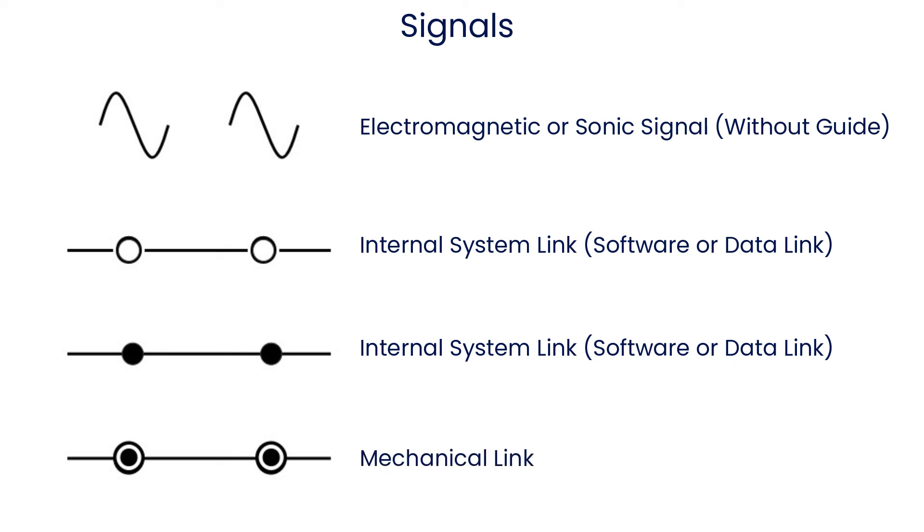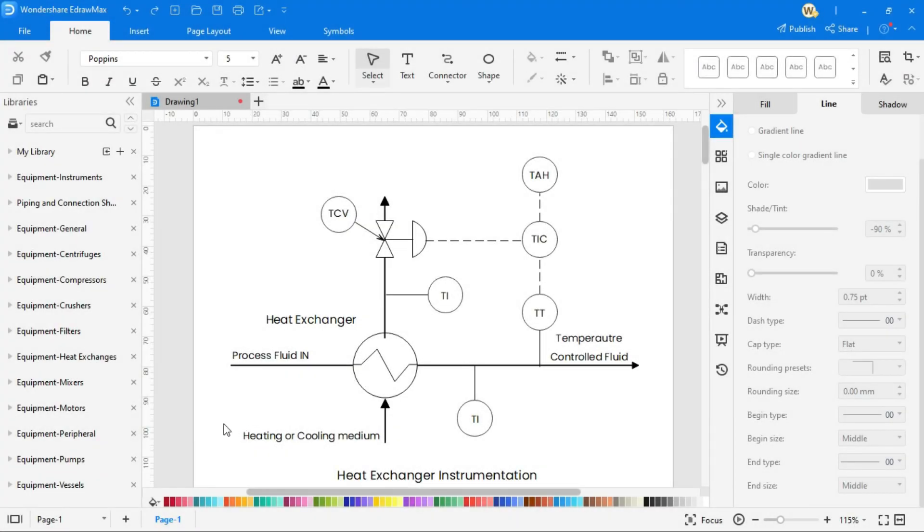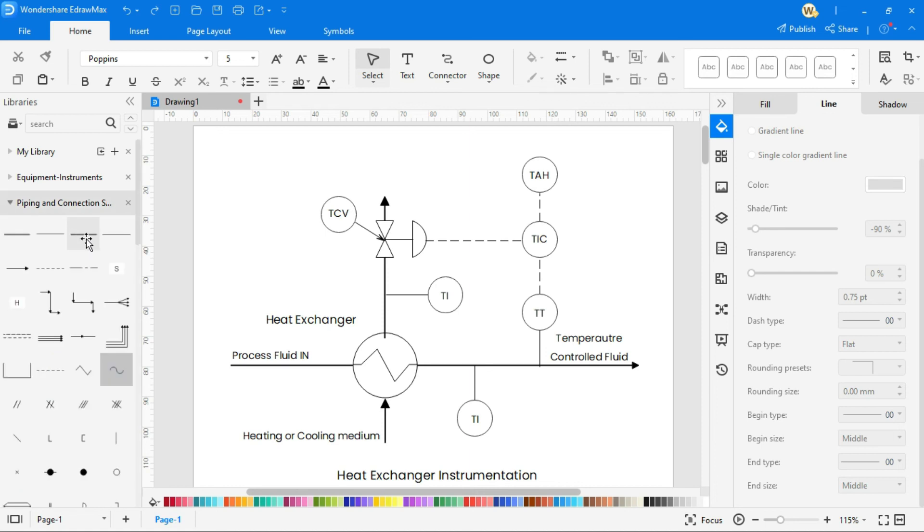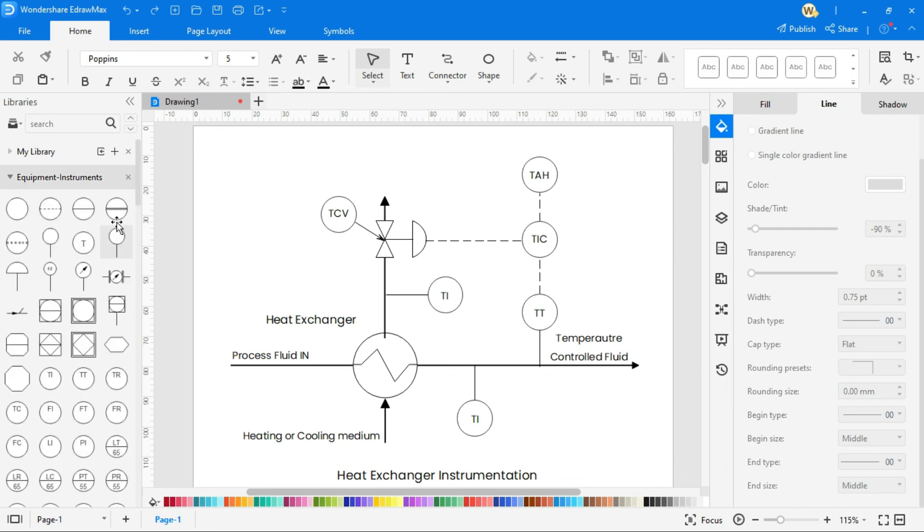You can find all kinds of P&ID symbols from the eDraw Max symbols library from the left side and can easily make any kind of P&ID diagram.